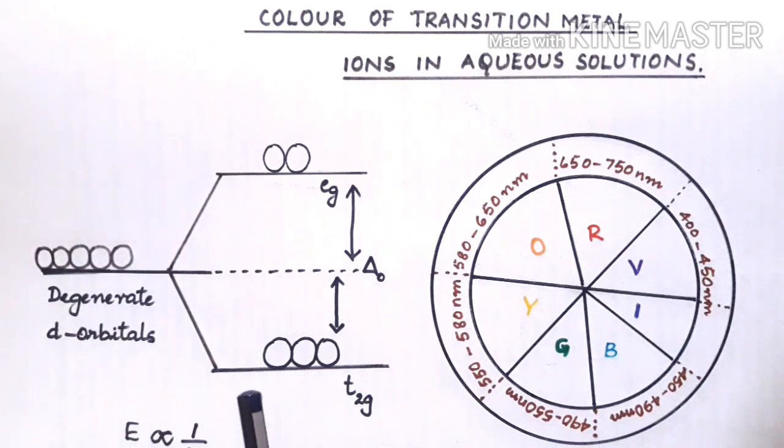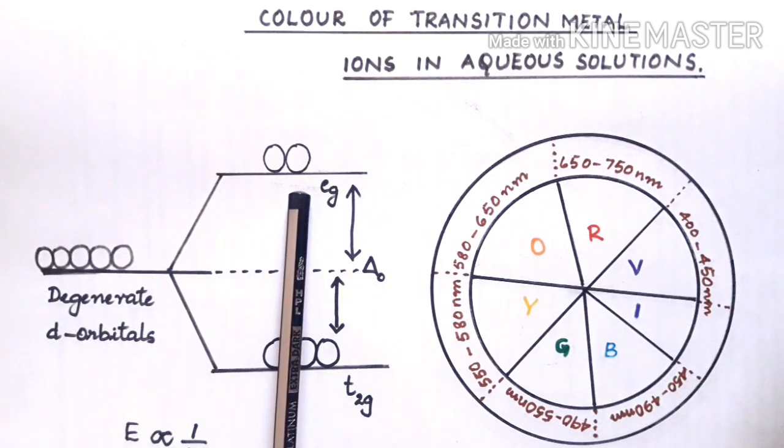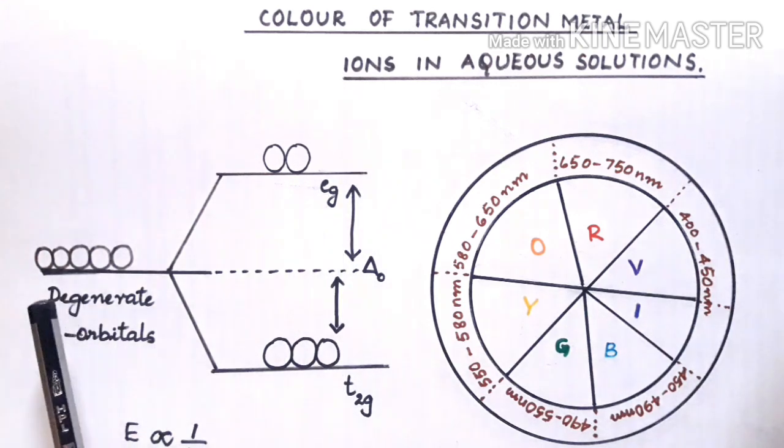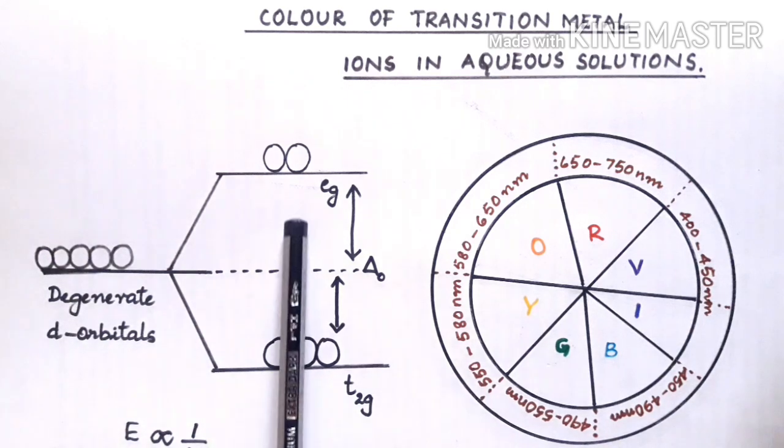You find that the orbitals which are coming in between the axes, d-xy and d-xz, will be lowered in energy and they will be called as the t2g orbitals. Whereas the orbitals which are lying on the axis, that is d x² minus y² and d z², they will be raised in energy and they will be called as eg orbitals. So when we find that ligands approach the metal ions, the degeneracy of the d-orbitals are completely lost and it results in splitting.